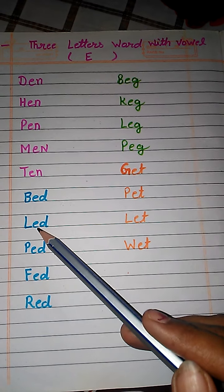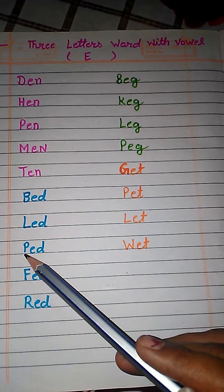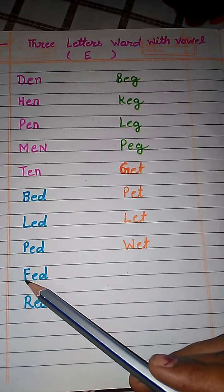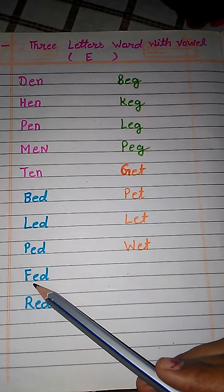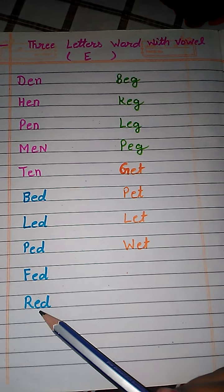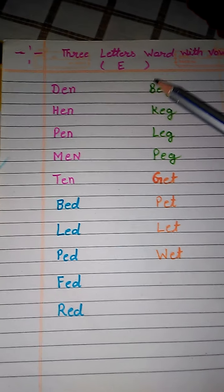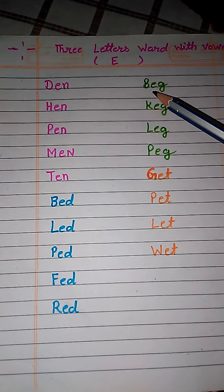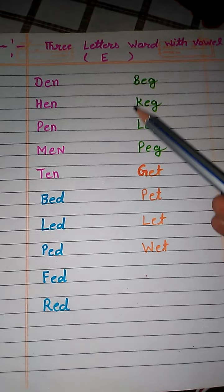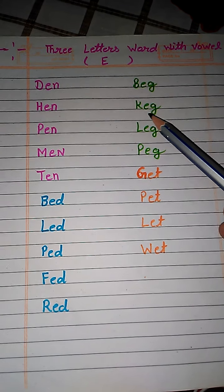L, E, D — led. P, E, D — ped. F, E, D — fed. R, E, D — red. B, E, G — beg. K, E, G — keg.